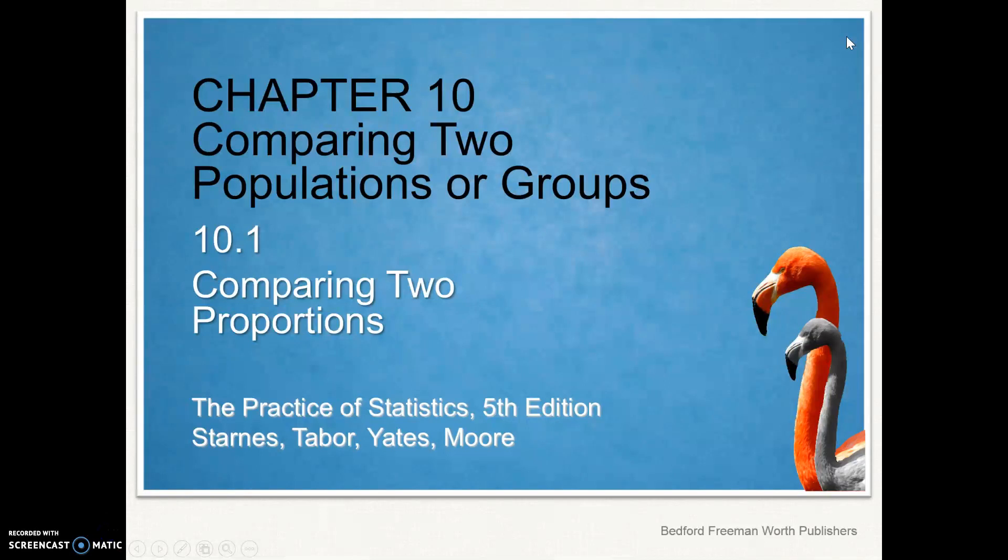Hello and welcome to Chapter 10 of AP Statistics, Comparing Two Populations or Groups. There are two sections of this chapter. In section 10.1, we'll be looking at comparing two proportions.